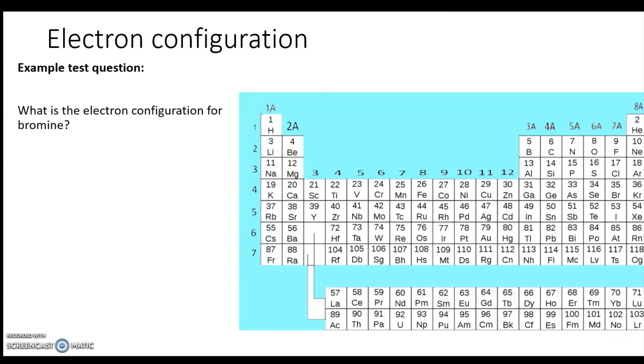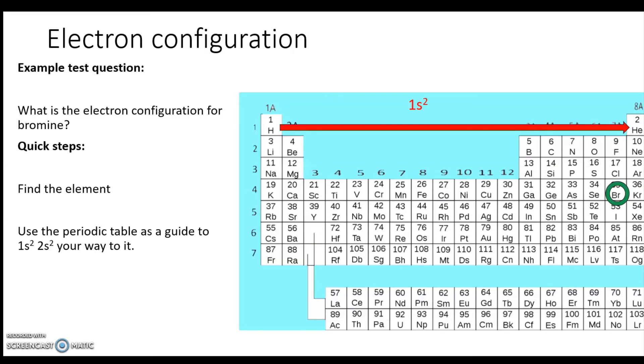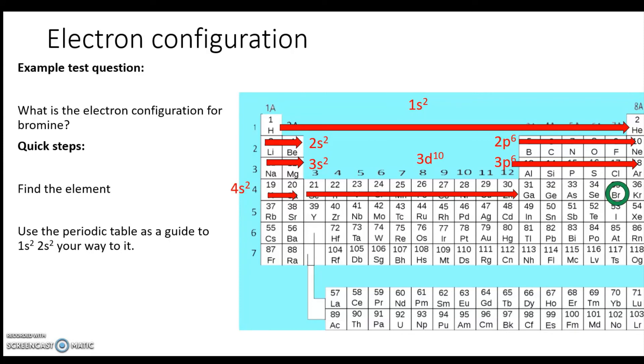The last one is bromine. We find bromine—it's right over here—and then just 1s² 2s² our way there: 1s² 2s² 2p⁶ 3s² 3p⁶ 4s² 3d¹⁰ and then lastly 4p⁵: one, two, three, four, five for bromine.